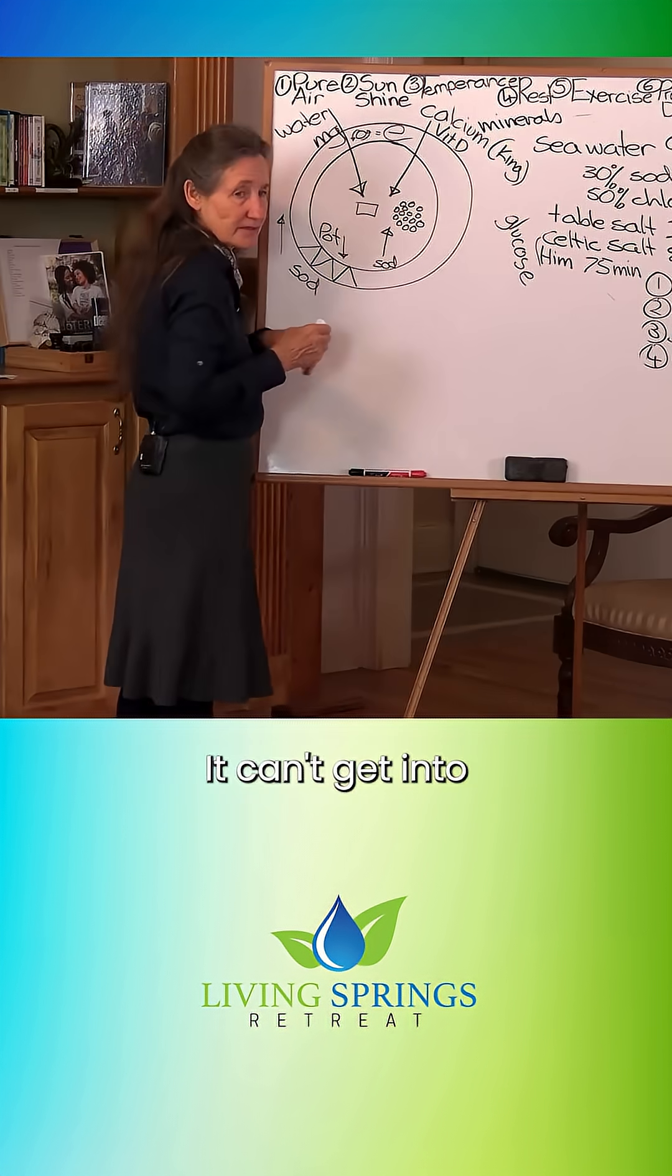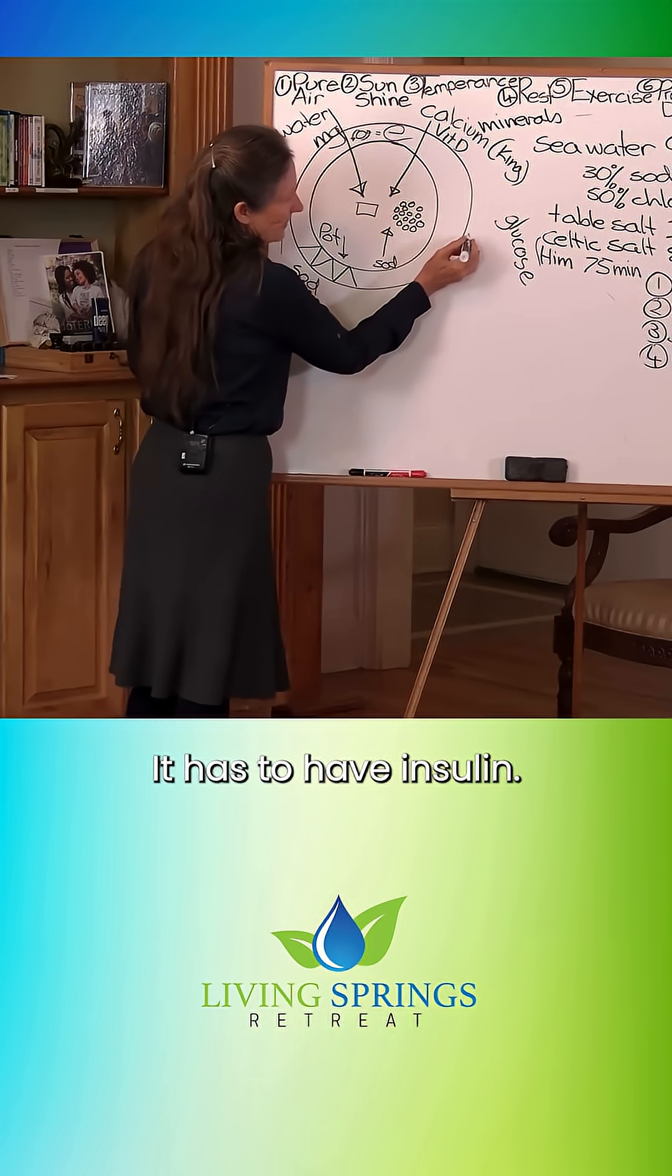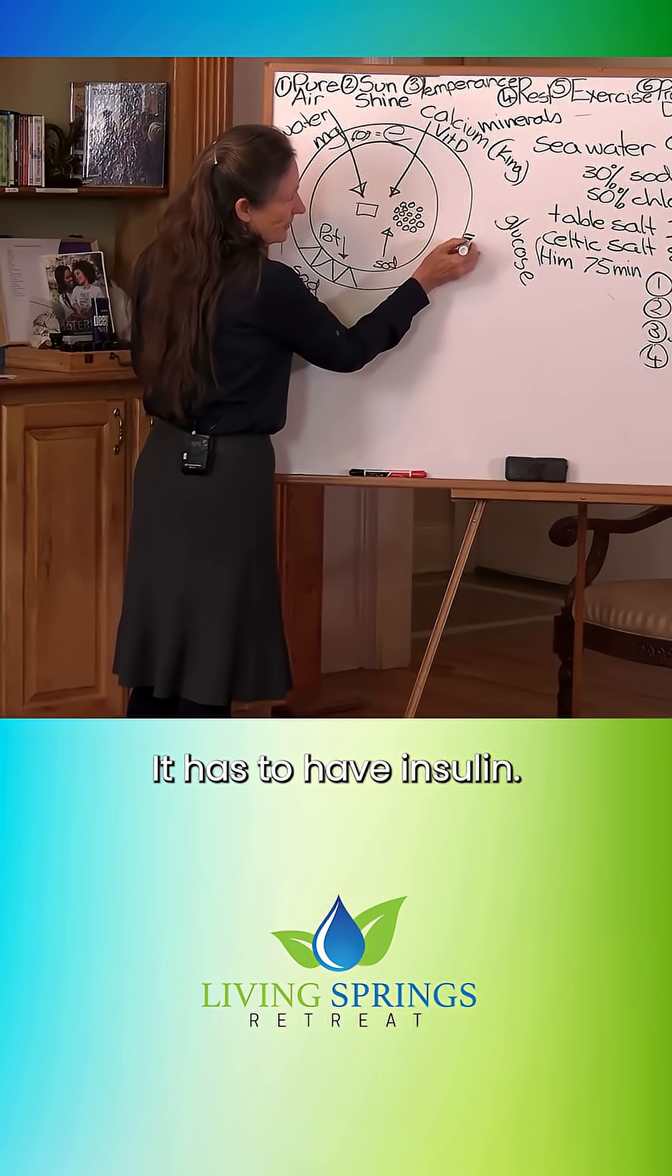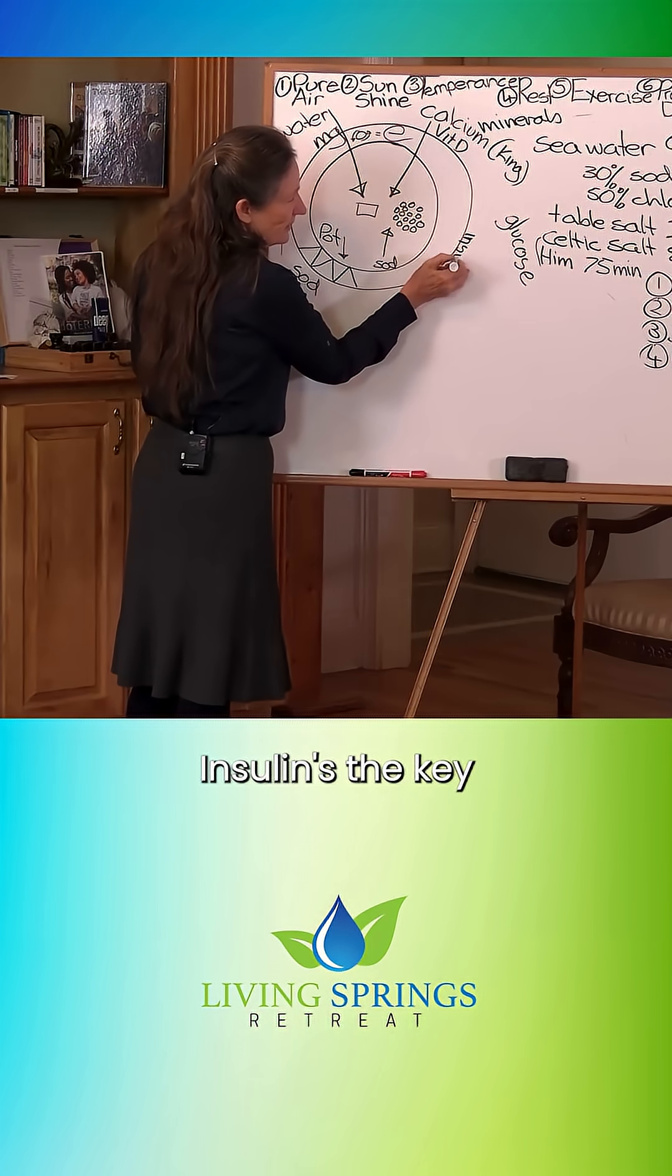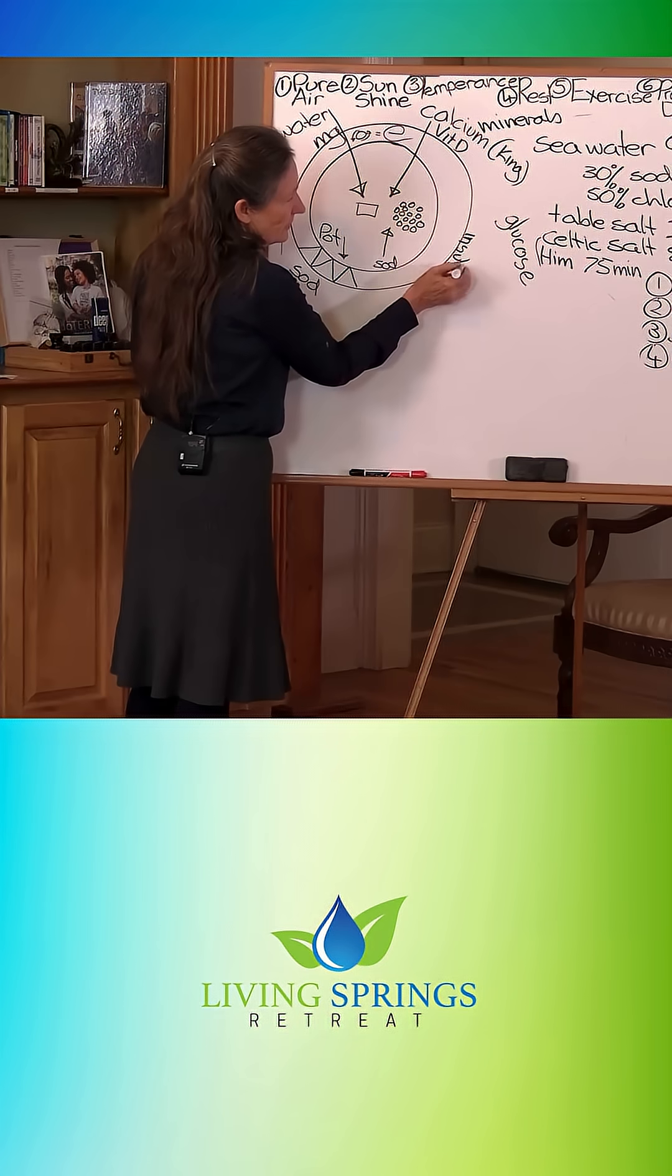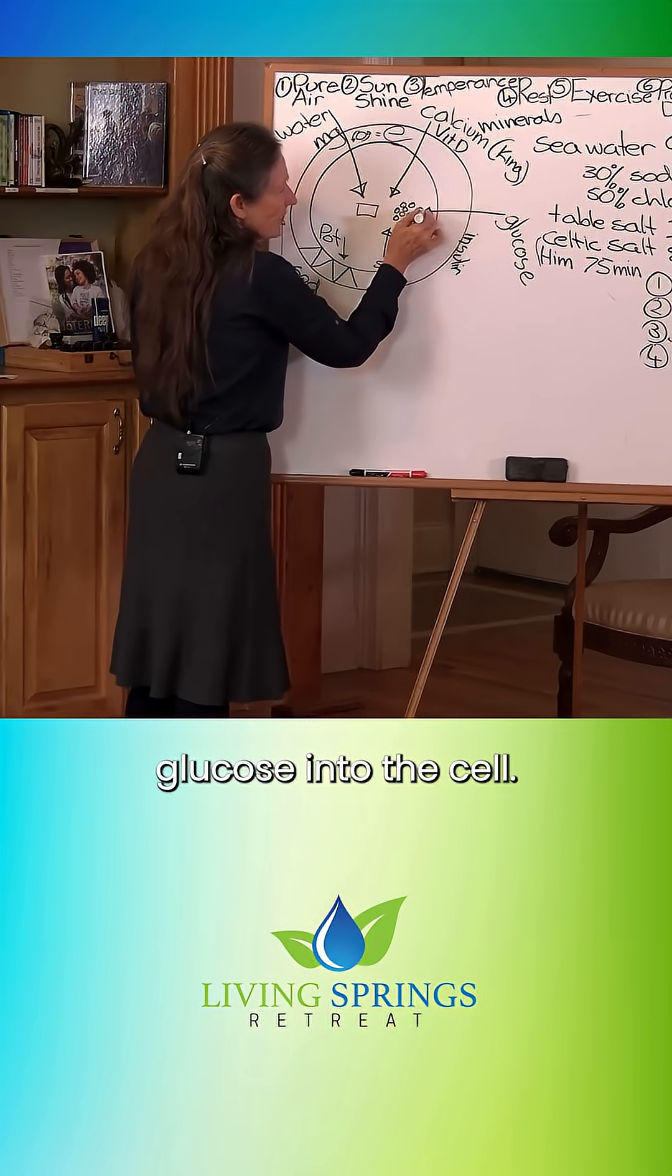Glucose can't get into the cell by itself, it has to have insulin. Insulin is the key that unlocks the door to let the glucose into the cell.